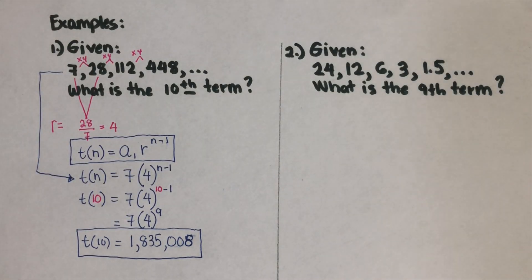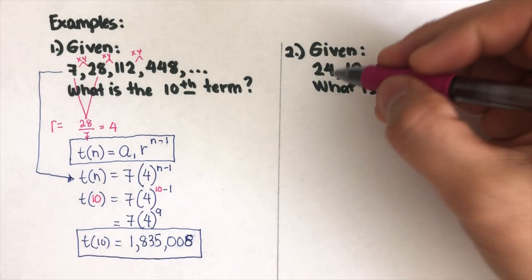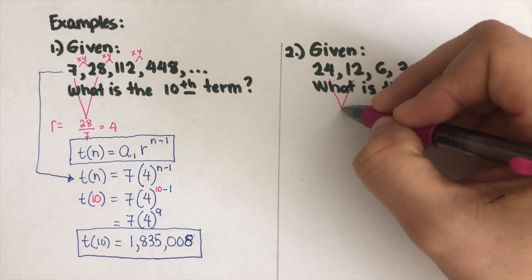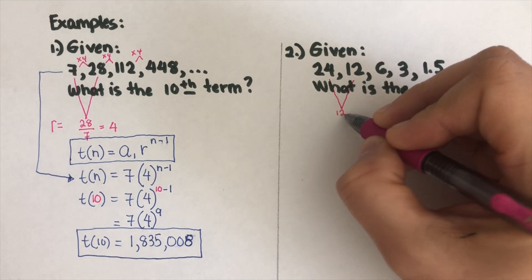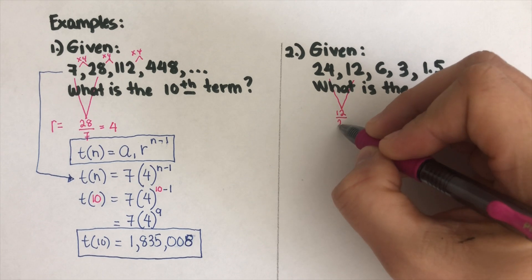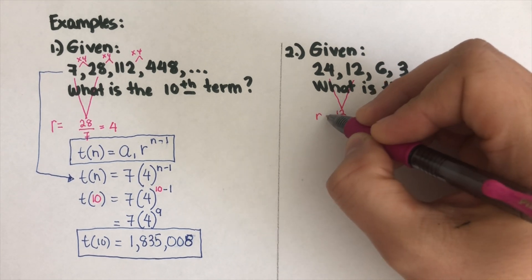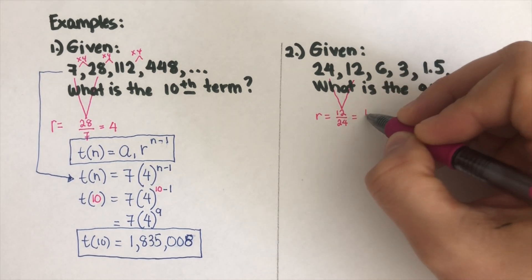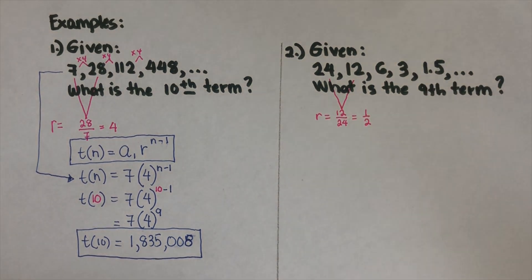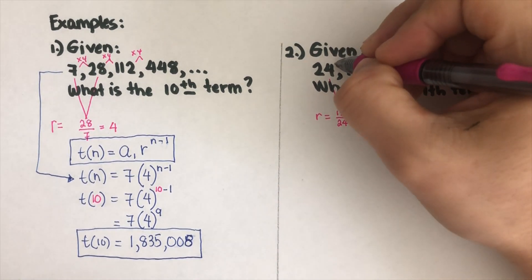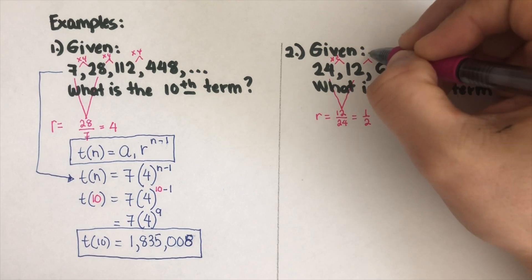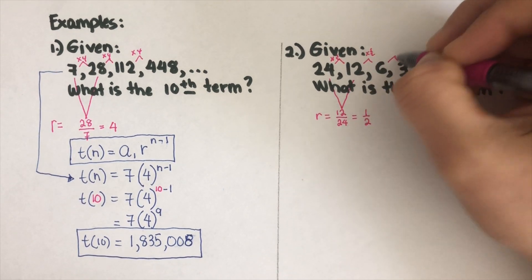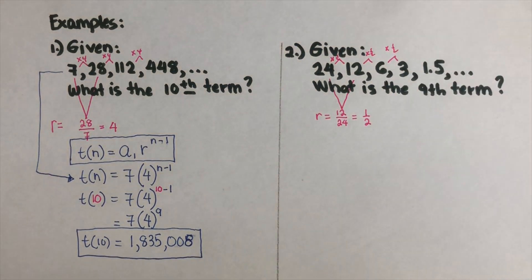Now let's look at the second example, which involves a fraction. To find the ratio, we divide: 12 over 24 = 1/2, so r = 1/2. Each term is multiplied by one half to get the next term.